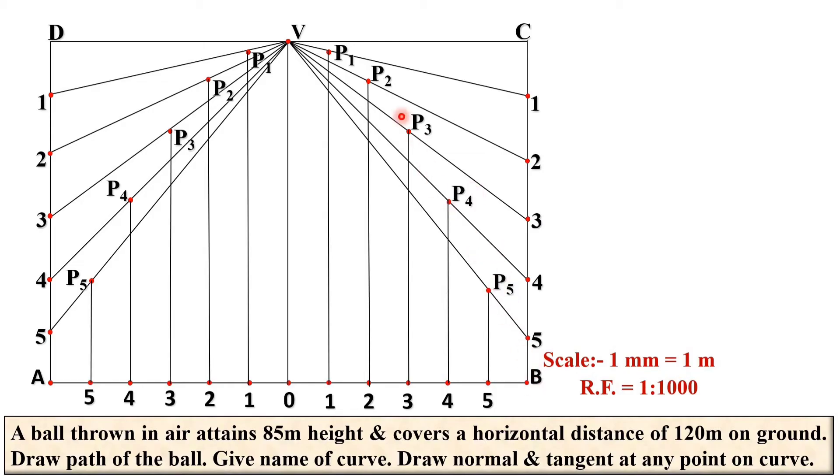Now join all the points by the smooth curve. Definitely it should be passed from A, V, and B also. Here keep in mind that this curve should be only the dark in the whole drawing because that is only your objective. Here you can see, draw the path of the ball. So this path of the ball should be the dark only. The remaining work should be as light as possible.